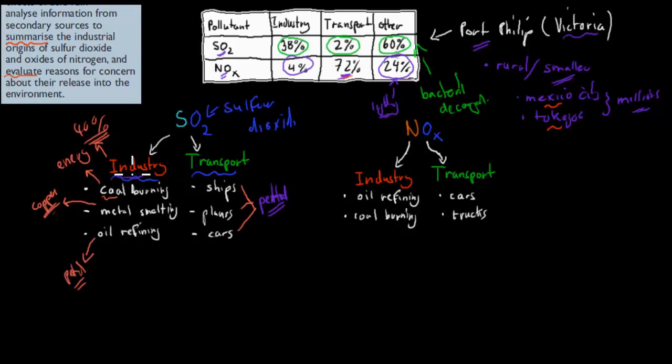But, yeah, when it says you need to summarize industrial, think of both industry here, these ones, but also transport ones. And, you know, have a rough idea of how much where's more of it released. So 40% is released in industry, whereas only 2% is released from transport, for the example of Port Phillip. But it would be similar to most other areas as well.